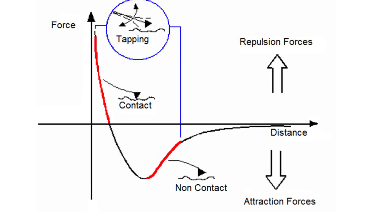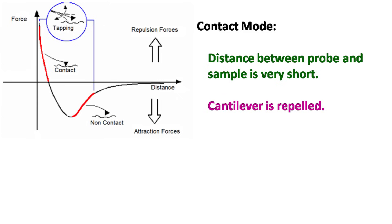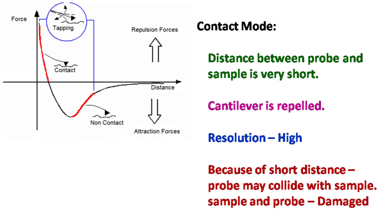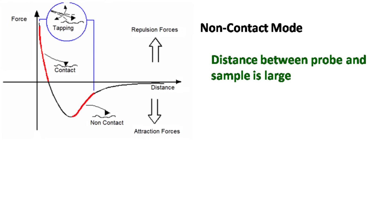In contact mode, the distance between the probe and the sample is kept very small. As a result, the cantilever is repelled. The resolution obtained by this mode is very high. However, because of the short distance, the probe may collide with the sample and damage it.